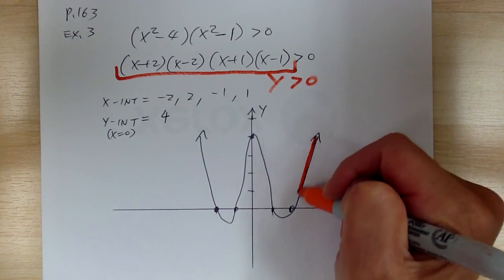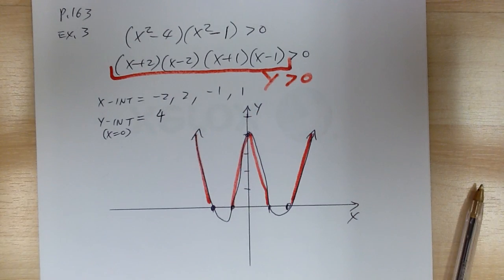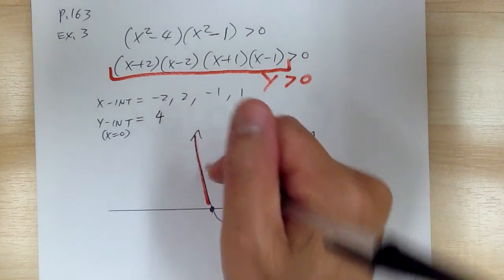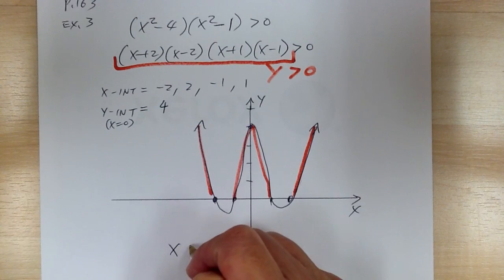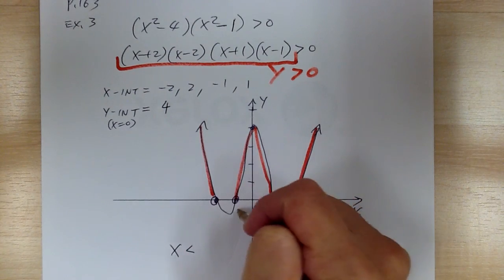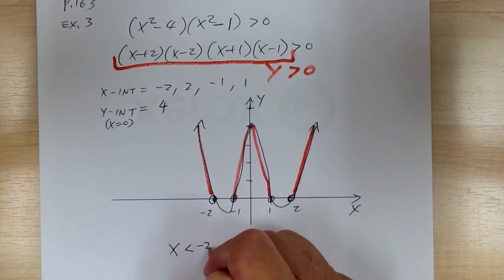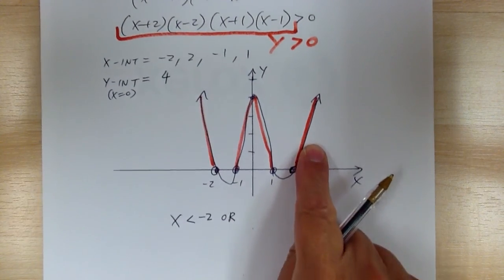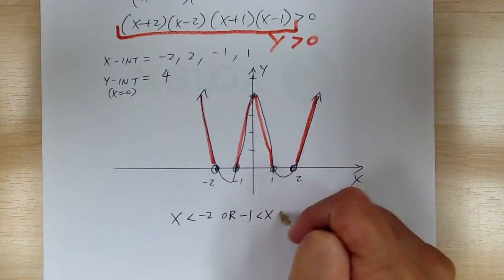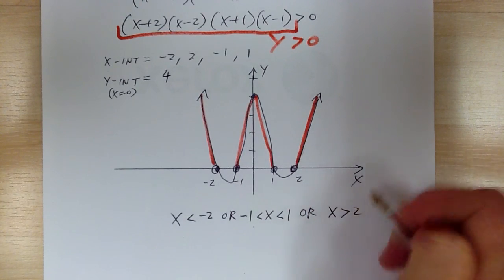The parts of the graph above the x-axis — where y > 0 — are the parts you want. You then read off the corresponding x-values. Since it's a strict inequality, use open circles. The answer is: x < -2, or -1 < x < 1, or x > 2.